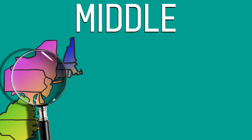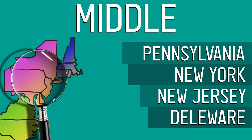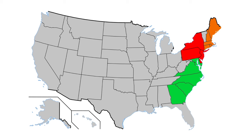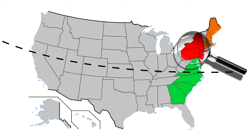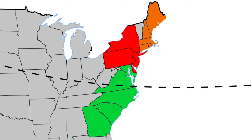Moving on to the Middle Colonies — those are Pennsylvania, New York, New Jersey, and Delaware. Now, there's no way Pennsylvania and New York are in the middle of the country today, but we're thinking about them in terms of the 13 colonies. Consider the first two UK establishments in the New World: Jamestown, Virginia, and Plymouth Rock, Massachusetts. Directly in between those two establishments lies the Middle Colonies.